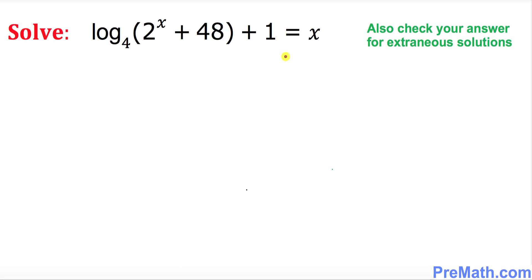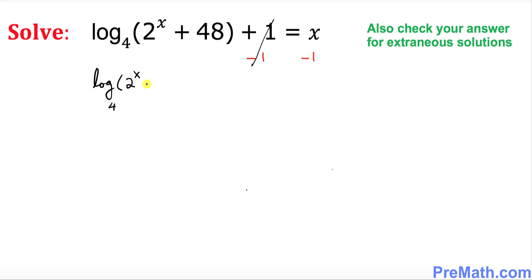Hello again everyone. In this video tutorial we are going to solve this given logarithmic equation. Before we get started, I want to make sure that we isolate this logarithmic part only. For that, I'm going to subtract 1 from both sides, so we end up with log base 4 of (2^x + 48) equals x minus 1.